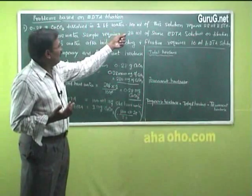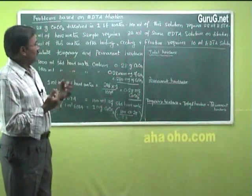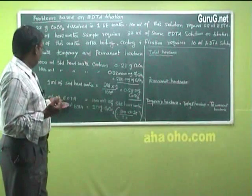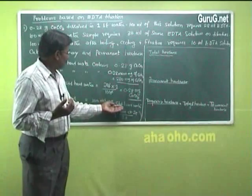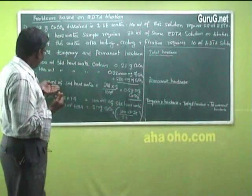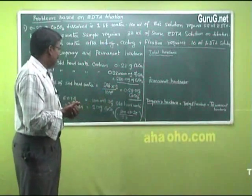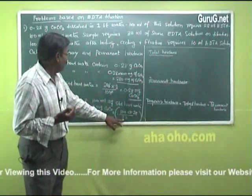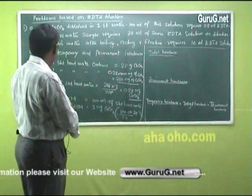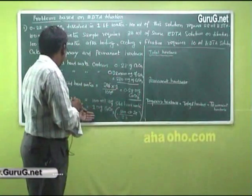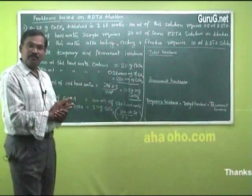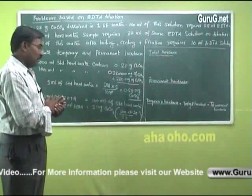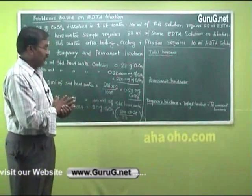In this problem, 100 ml of standard hard water requires 28 ml of EDTA. That is, 28 ml of EDTA equals 100 ml of standard hard water. We know 1 ml of standard hard water contains 0.28 mg of CaCO₃. Therefore, 1 ml of EDTA is equal to 1 mg of calcium carbonate.